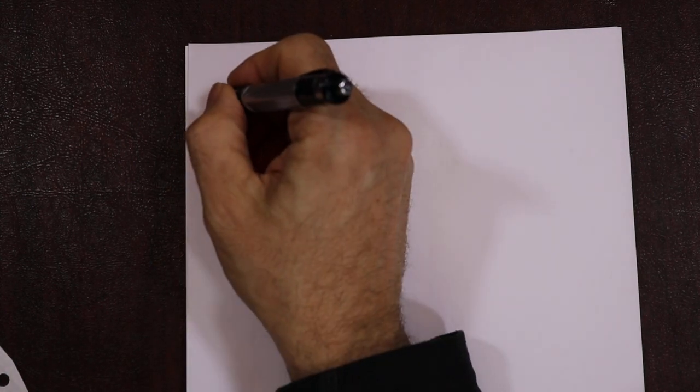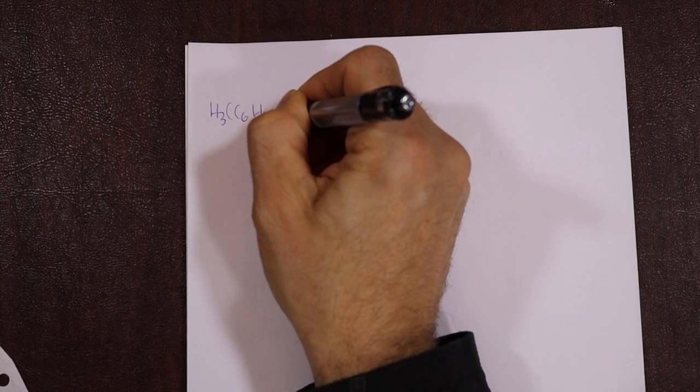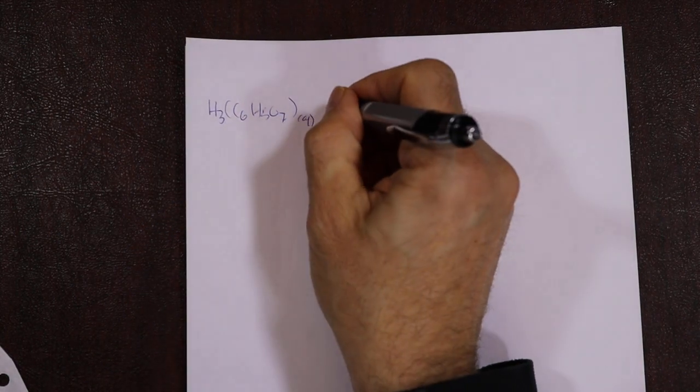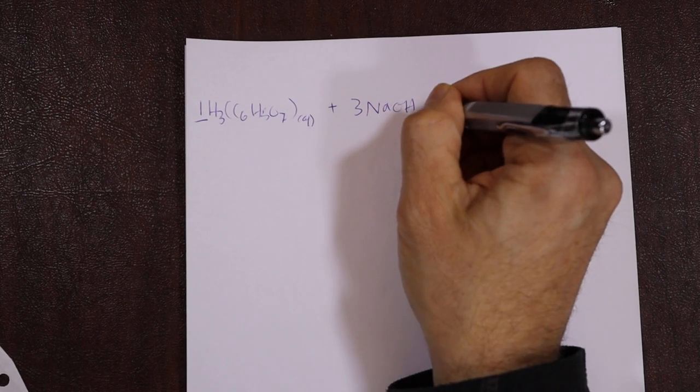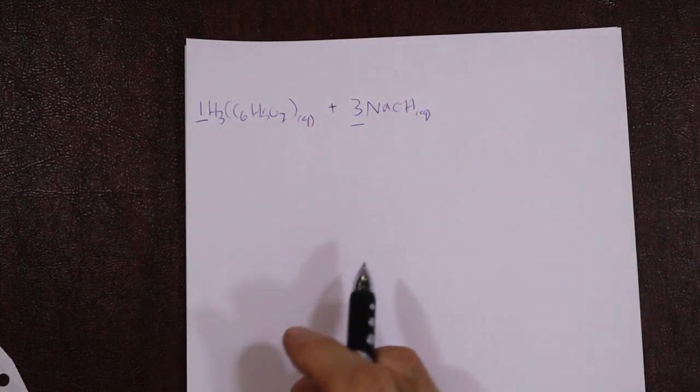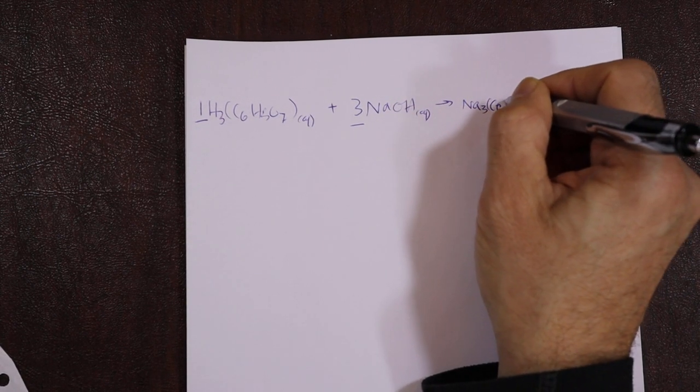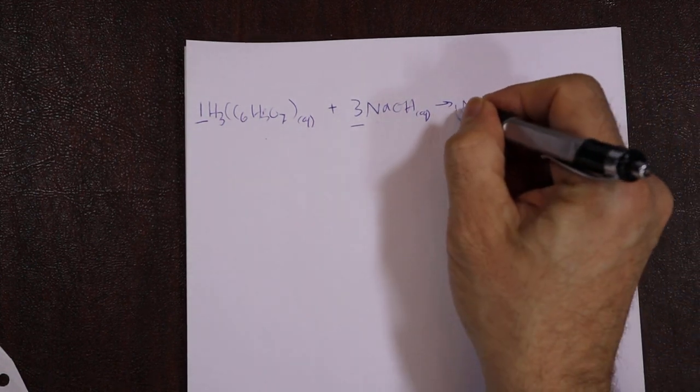I'm going to rewrite my equation. H3C6H5O7, that's my Mountain Dew sample sitting in that Erlenmeyer flask. Plus 3 NaOH from the burette. It reacts to form Na3C6H5O7 plus 3H2O. Acid plus base makes salt plus water. One citric acid reacts with three sodium hydroxide.